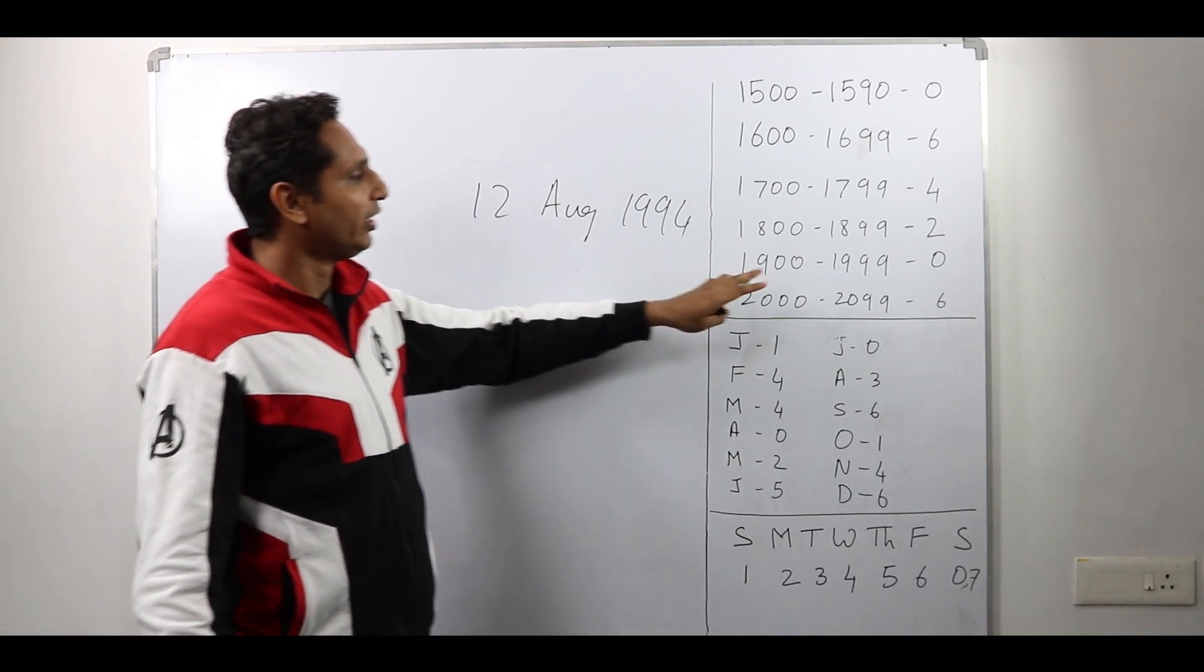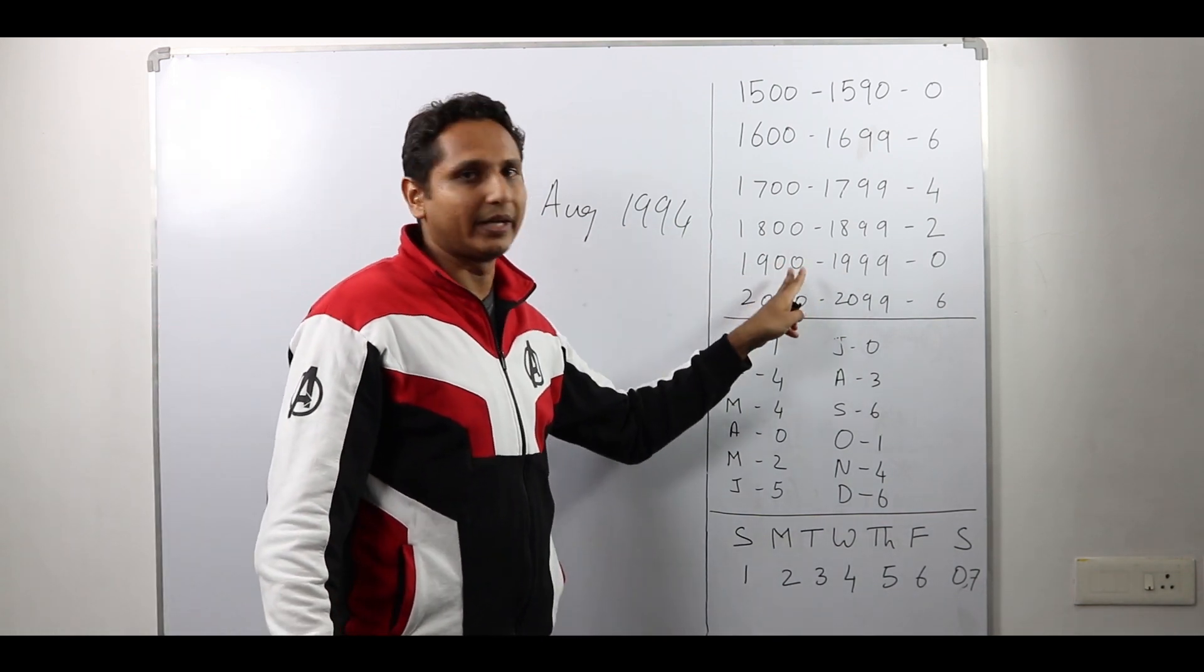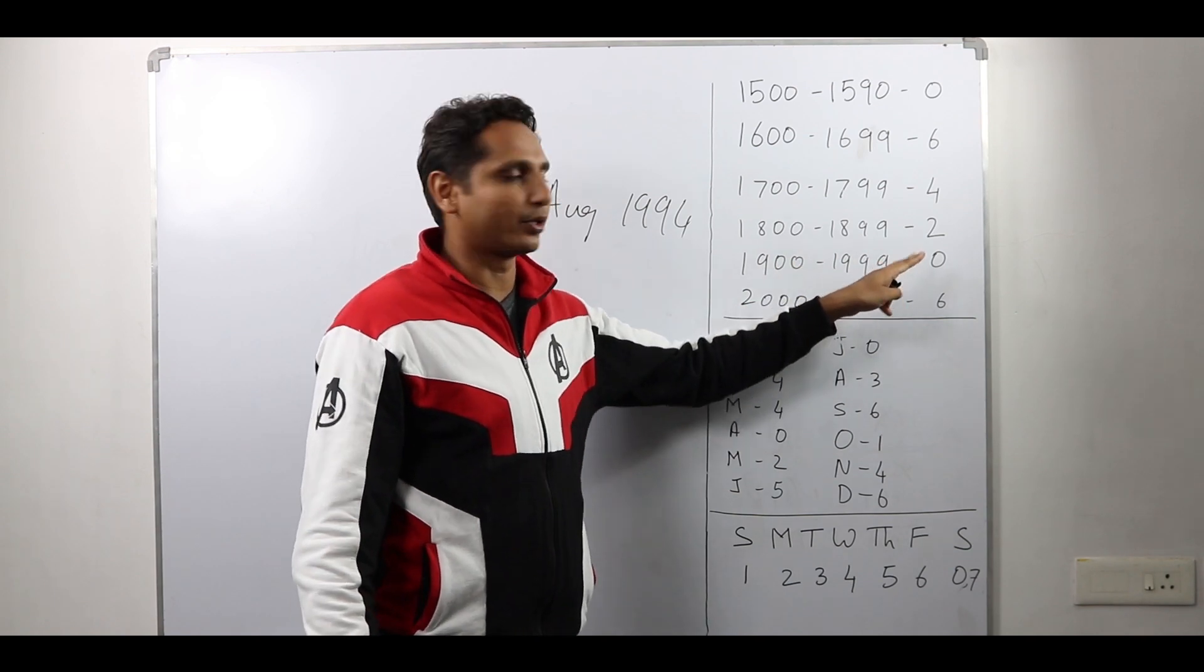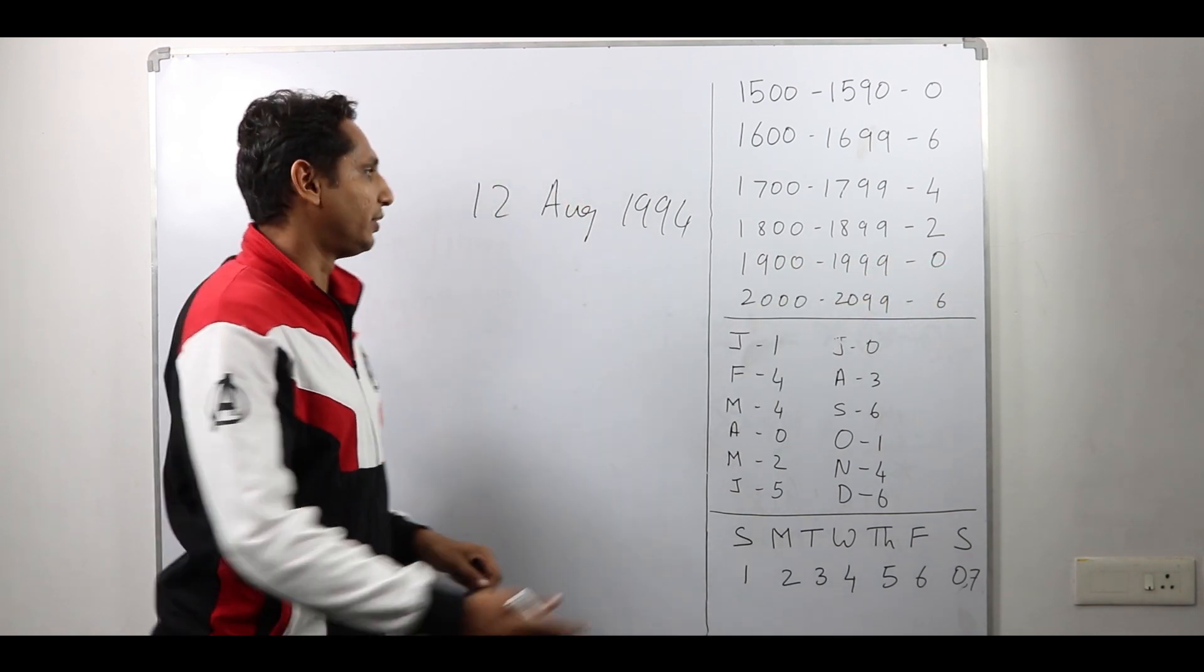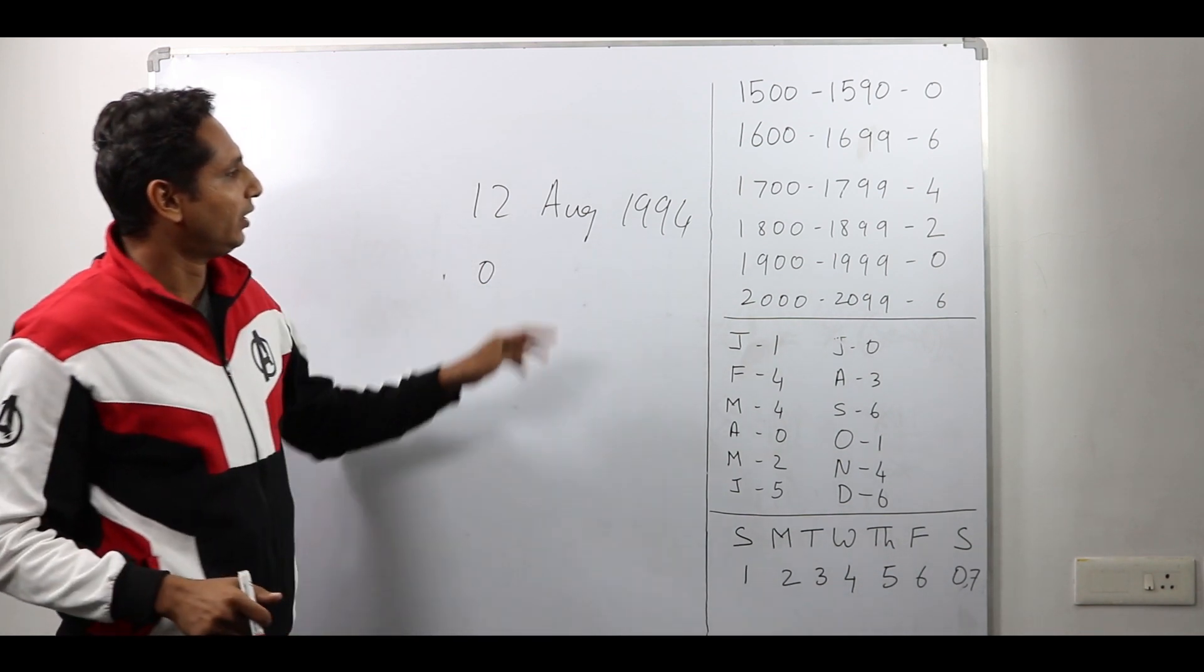The year is 1994 which falls in this slab between 1900 and 1999. So the code for this is 0. I write 0 here.